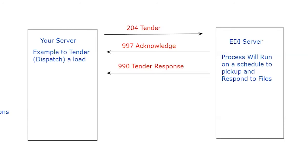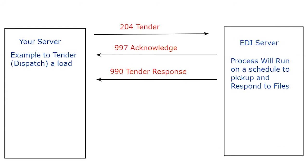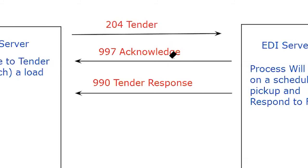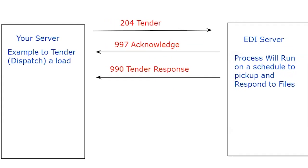The first thing that happens on that scheduled run is you're told the file was picked up. You'll get a 997 acknowledgement. As you can see here, this acknowledgement is simply saying, 'I got your file and it looked good.' That doesn't mean they accepted the load or threw it away — it just means they got your file. Sometimes there are built-in checks indicating whether it was formatted correctly or not. This is why EDI is very good at verifying file transfers. Not everybody implements the 997 acknowledgement — it's more involved during development — but in most cases, we do.